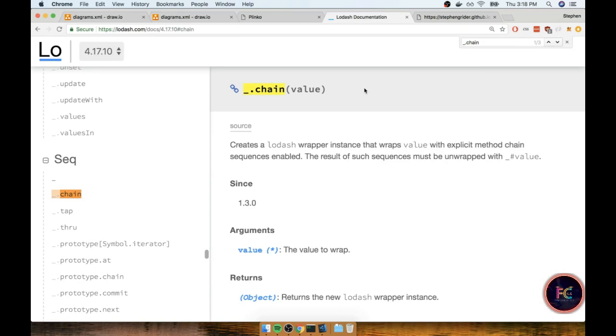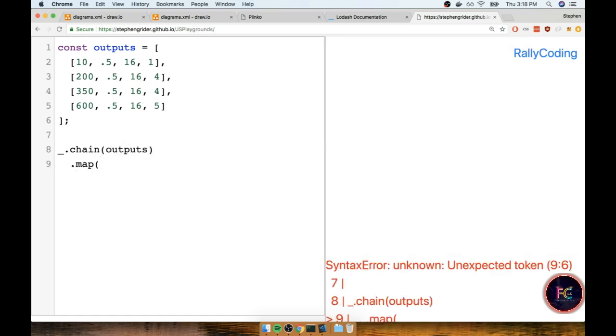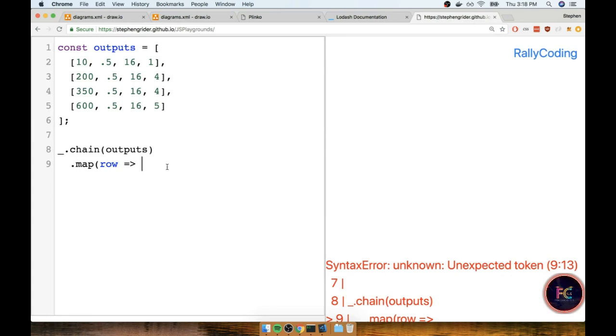Back inside my editor, I'm going to start off my dot chain and pass in outputs. I'll then map over that, and for every row I want to return another array that has first the distance to 300 pixels as the first element and then the bucket as the second element. Now if I put all the code for getting that distance directly into this map function, it might look a bit dirty. So let's make a separate helper function called distance.